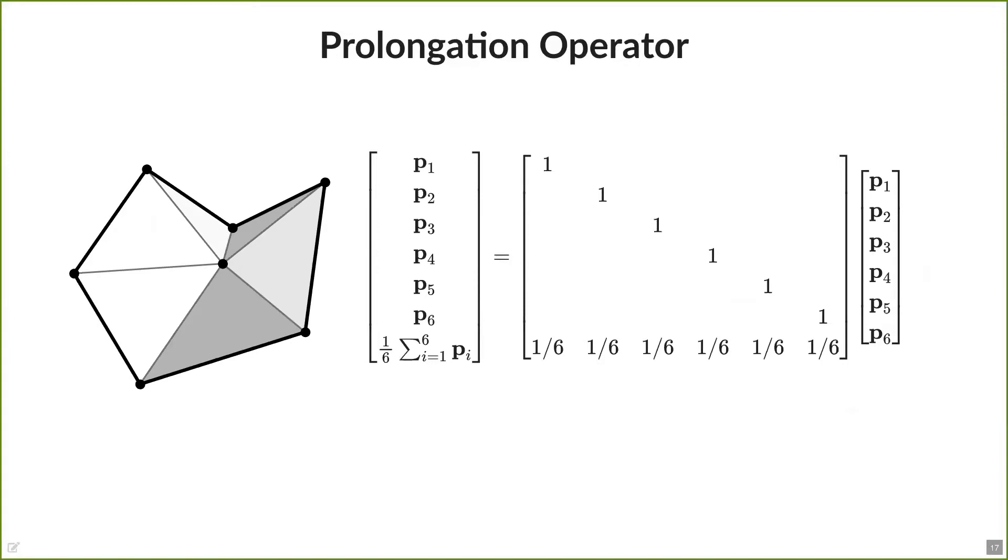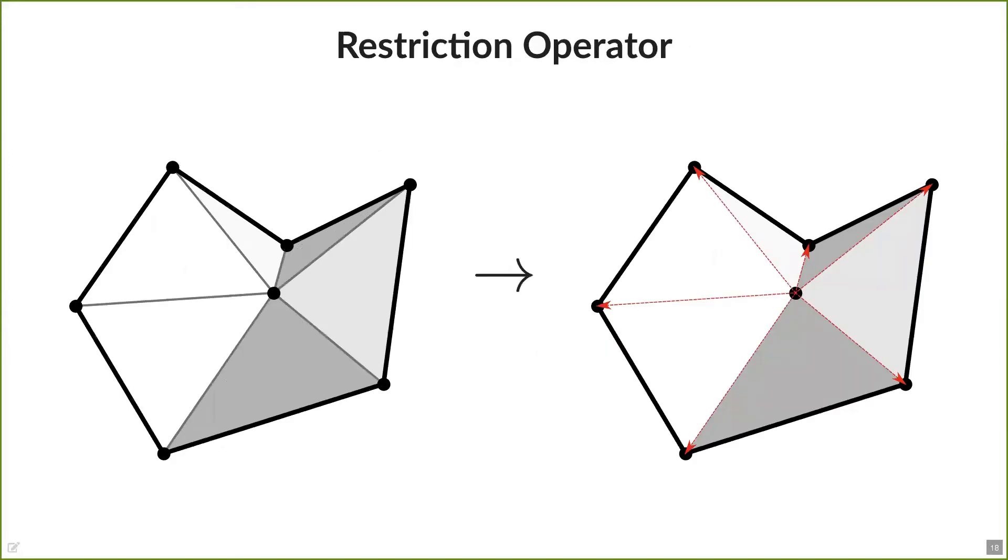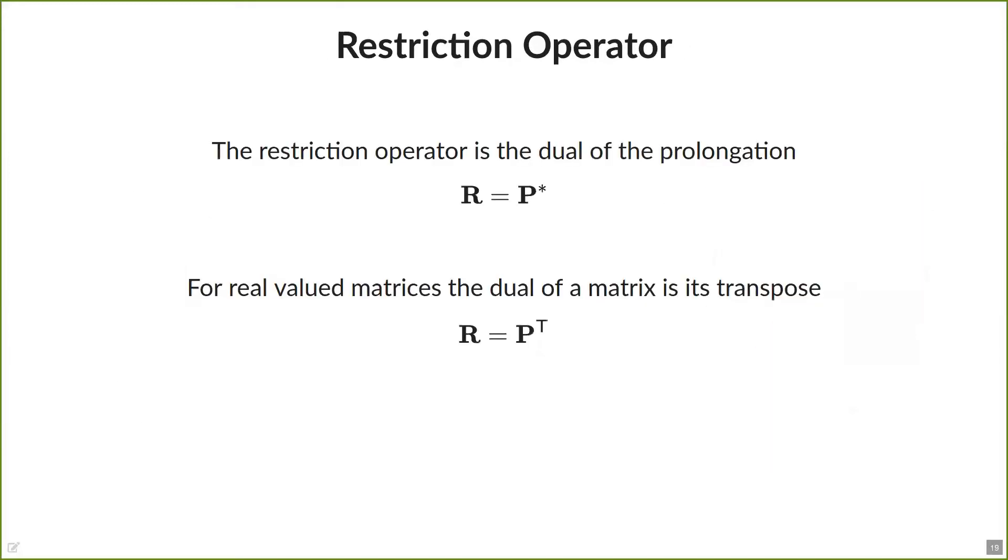After computing the cotangent operation on this mesh, we have to transfer the information back to the original one. Fortunately, the restriction operator is defined as the dual of the prolongation, and since our prolongation is a real valued matrix, as I've just shown you, the restriction operator can be simply obtained by taking its transpose, because the dual of a real valued matrix is its transpose.